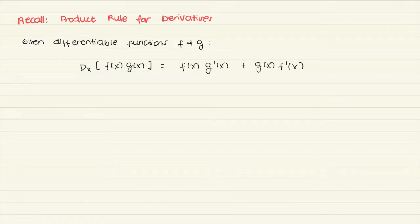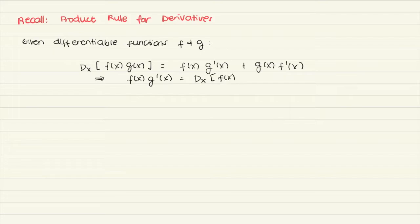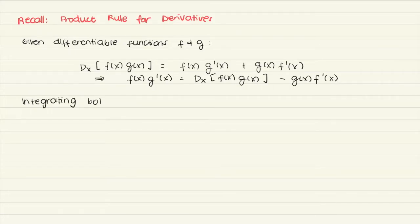This is just the left-right, right-left rule. Then we will transpose the term g f prime of x to the other side, so we get f g prime of x is equal to the derivative of f times g minus g f prime of x. Now we will integrate both sides with respect to x, and on one side we get the integral of f g prime of x dx.